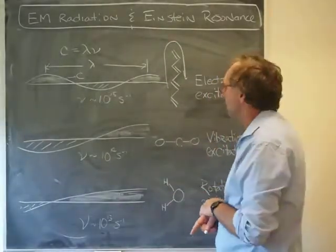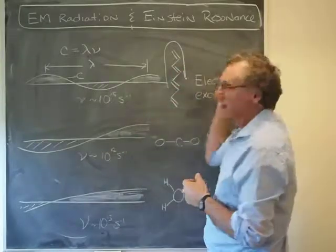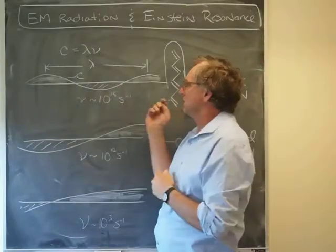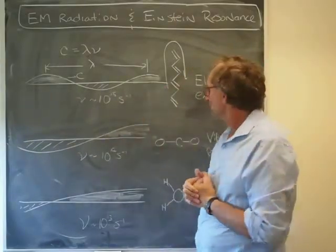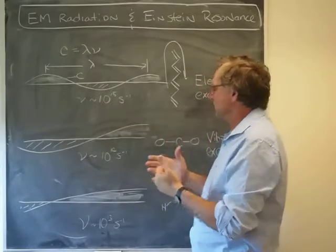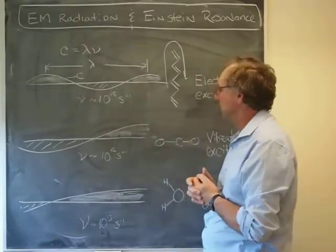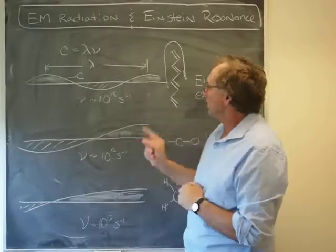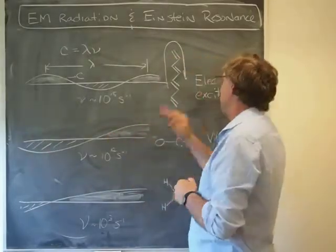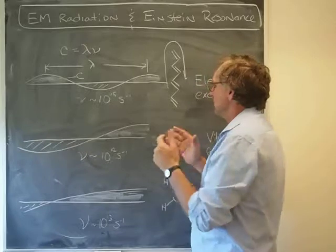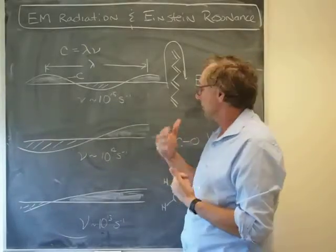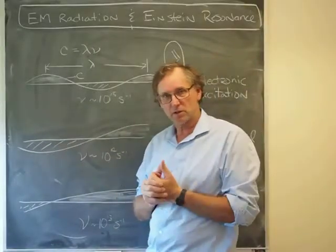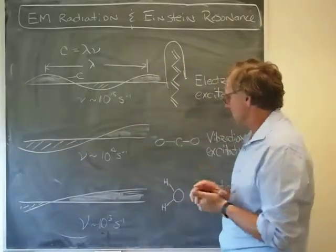So this matching is what's called Einstein resonance. It's basically the idea that light, in order to drive motions of the atoms, electrons, or molecules, has to have more or less the same frequency—that is, the frequency of the light has to match the frequency of the natural motion. So when we have Einstein resonance between the light and electronic motion, then the light can drive electrons to higher orbitals, and ultimately that's generally what we associate with color.